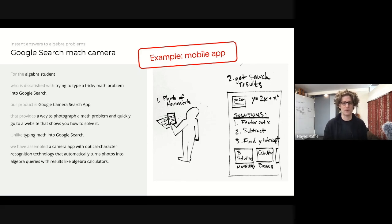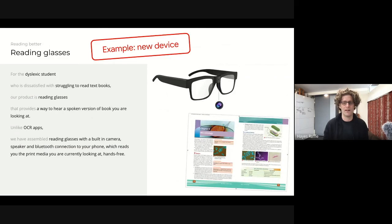This template is nice because it can also be used for hardware products. I've spent a lot of my career working on new hardware. So I thought it would be fun to throw in one hardware product here. This is based on a product that's currently available to blind users. But here I'm imagining it for a dyslexic student. These are reading glasses for the dyslexic student who is dissatisfied with struggling to read books.